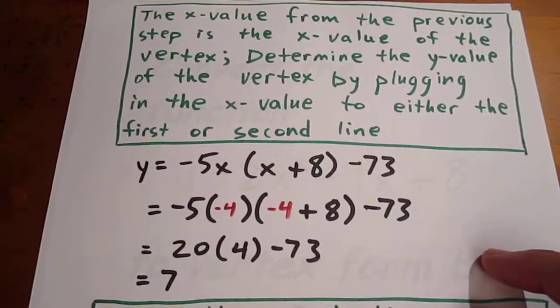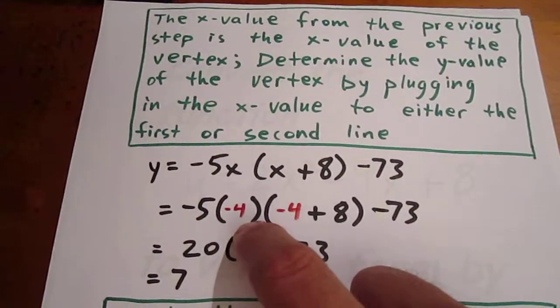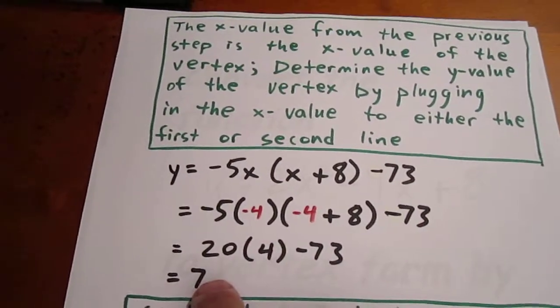is 7. So what we now have is a situation where we know the leading coefficient of negative 5, the x value of the vertex is negative 4, and the y value is 7.